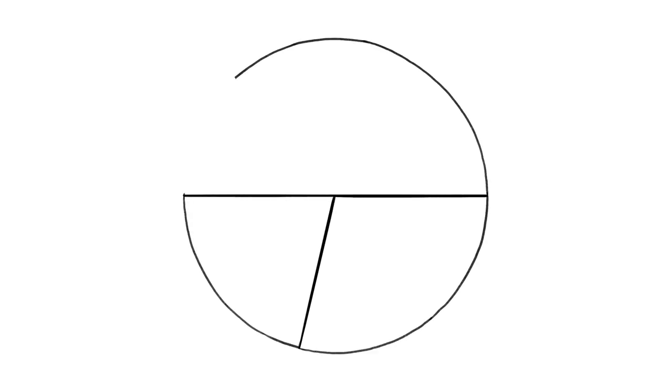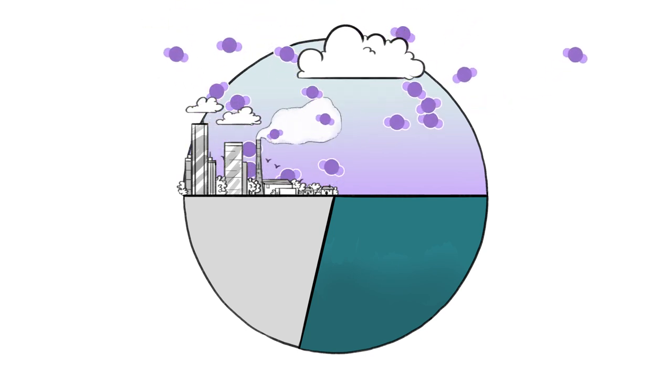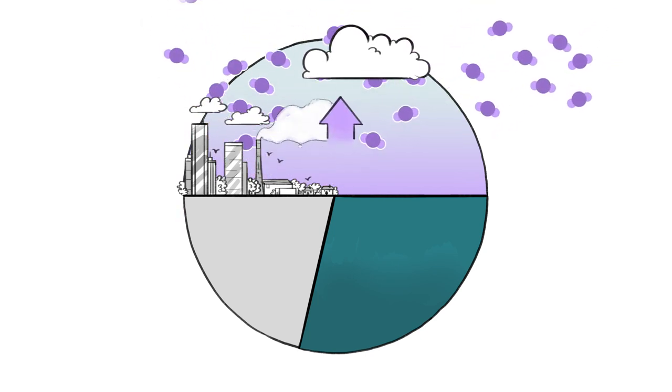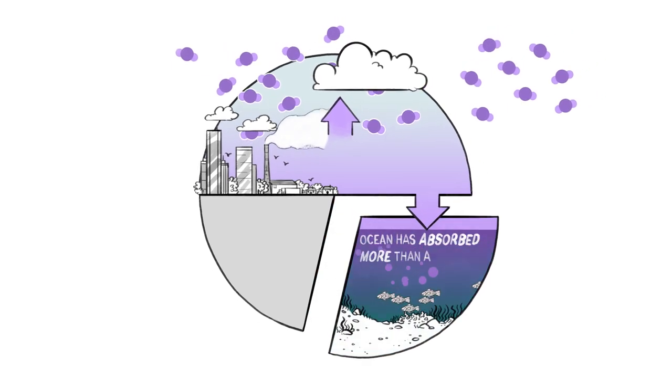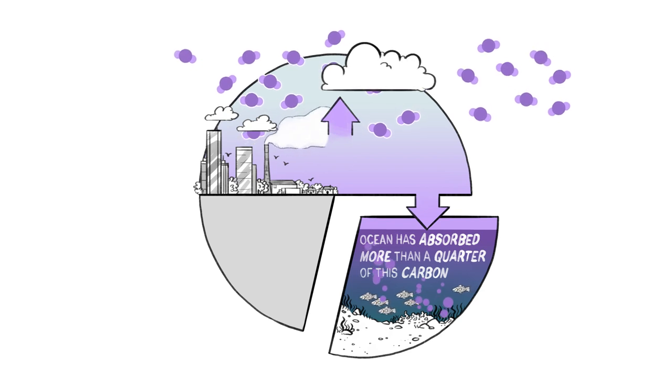Over the past 200 years, we have built a globalized economy based on fossil fuels and added 555 billion tonnes of CO2 to the atmosphere. The ocean has absorbed more than a quarter of this carbon, thereby increasing seawater acidity by 30%.